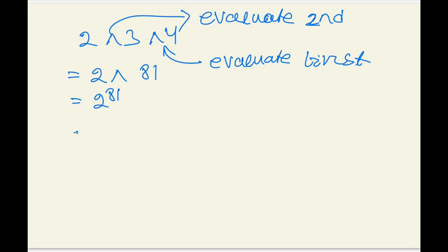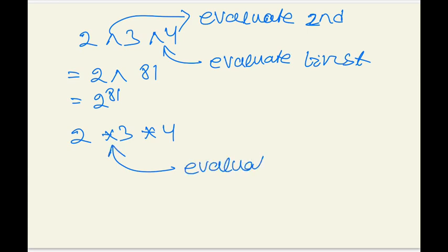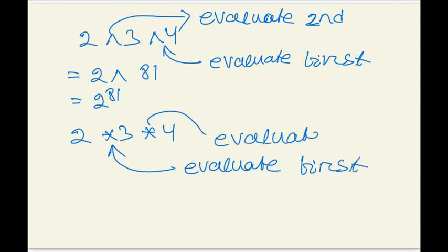For multiplication, 2 multiplication 3 multiplication 4 — multiplication is left-to-right associative, so the left one is evaluated first. To summarize: except for exponentiation, all other arithmetic operators are left-to-right associative. Only exponentiation is right-to-left associative.